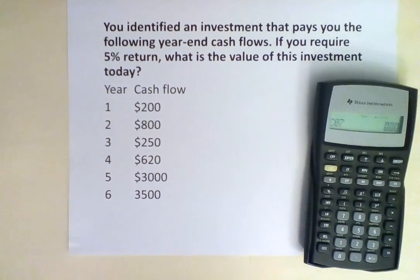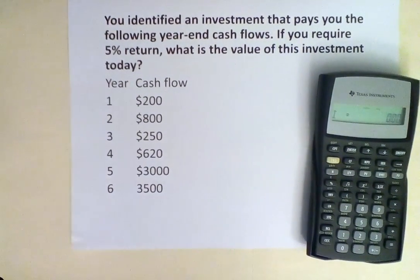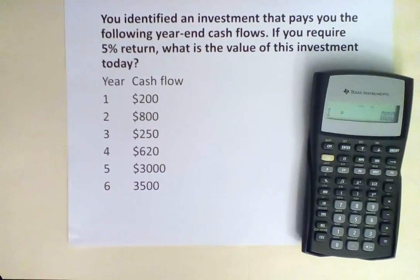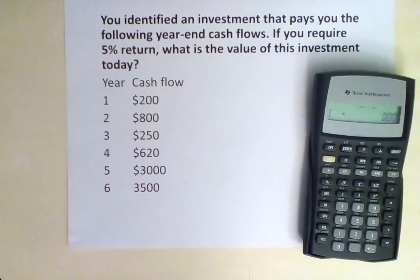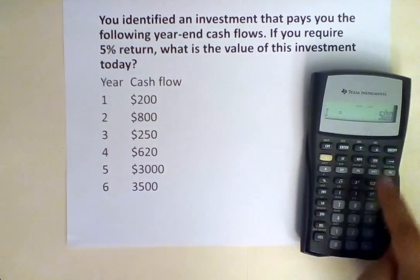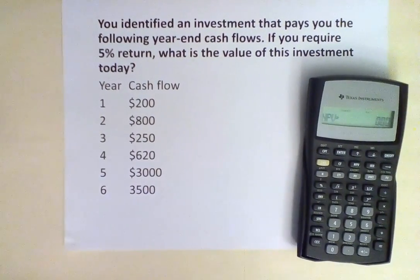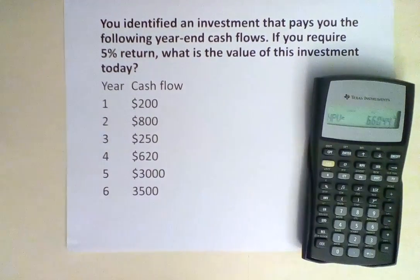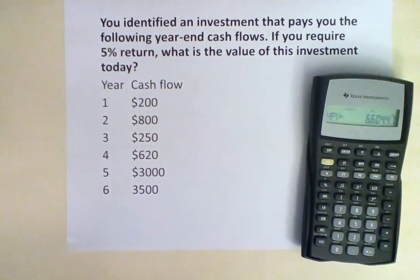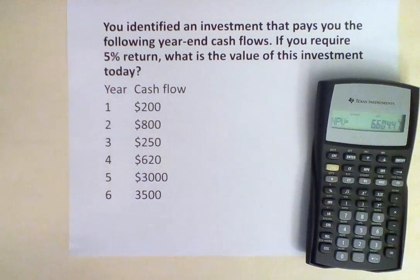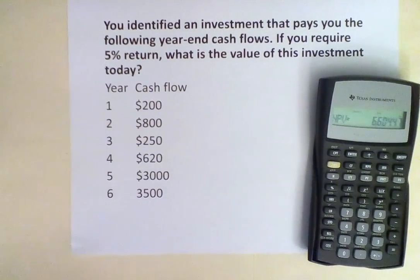Next, to determine the present value of these cash flows, we use the NPV button. Hit NPV, and you see I equals — this is where we enter the interest rate we are earning on this investment. From the problem, we know it is 5%, so we enter 5. Hit enter, then the down arrow. Here you see NPV — hit CPT to compute. The present value of all these cash flows is $6,604.47. This means that the value of this investment today is $6,604.47.